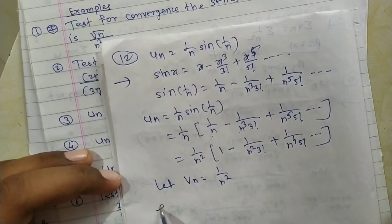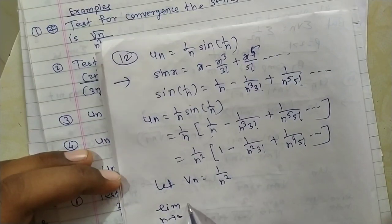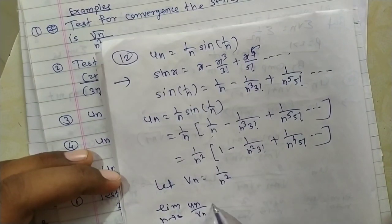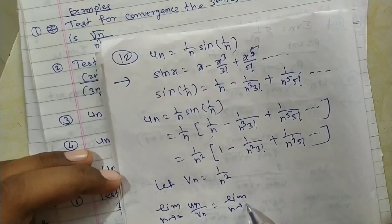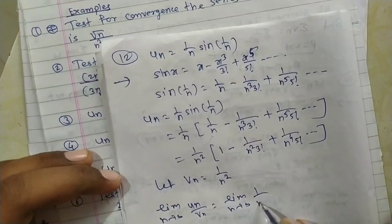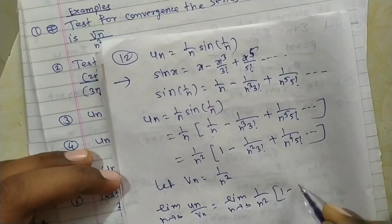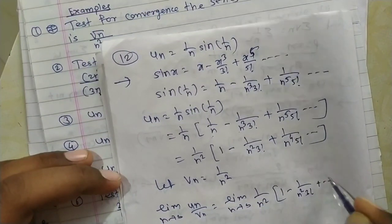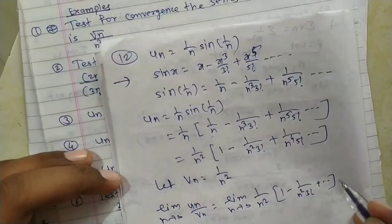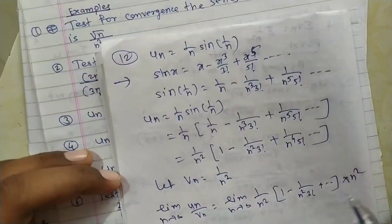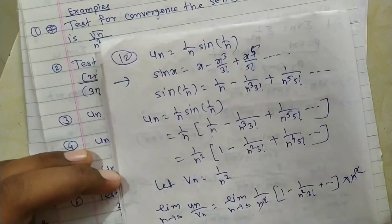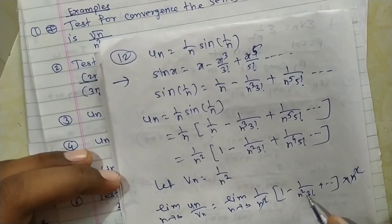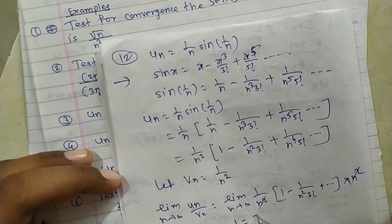Find limit of un/vn as n→∞: un/(1/n²) = [1/n² − 1/(n⁴·3!) + ...] × n² = 1 − 1/(n²·3!) + ... As n→∞, all terms after 1 go to zero (1/∞ = 0), so the limit = 1. This is finite.